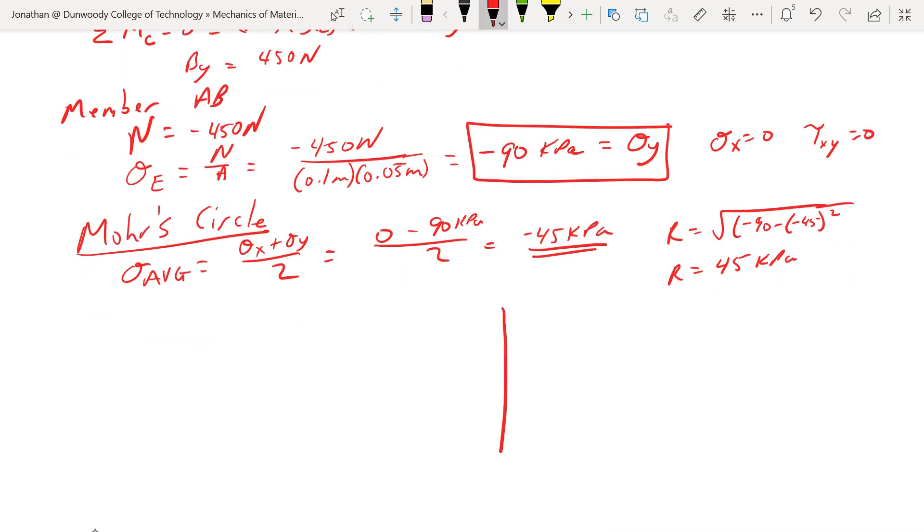So we sketch this out. Here's tau xy is down. Sigma x is positive to the right. We're at negative 45. Our radius is 45. Our sigma x was 0. So here's point A here. This is negative 45 and 0. This is 0 and 0. This is negative 90 and 0. So my Mohr's circle, or circle-ish thing here.